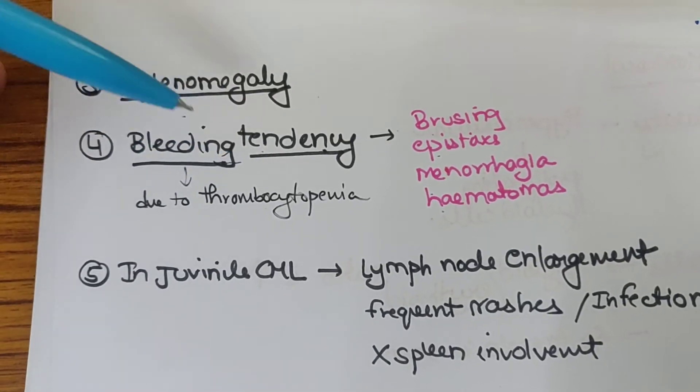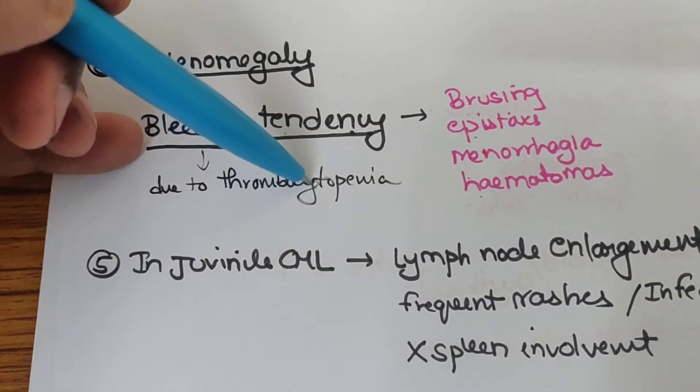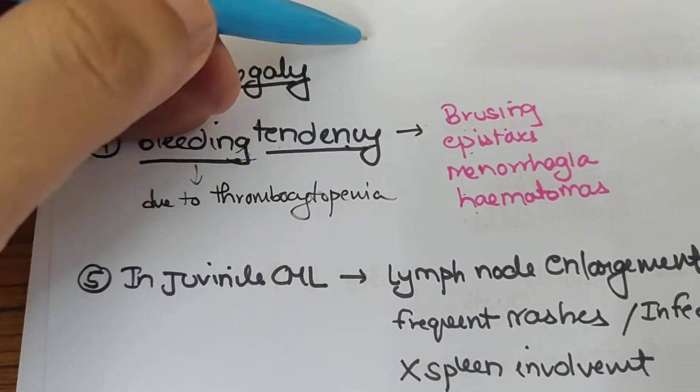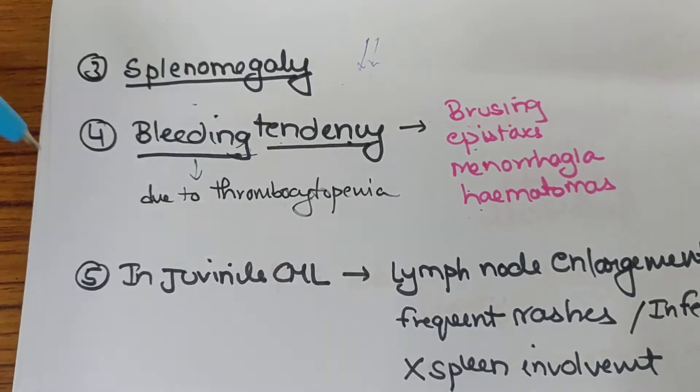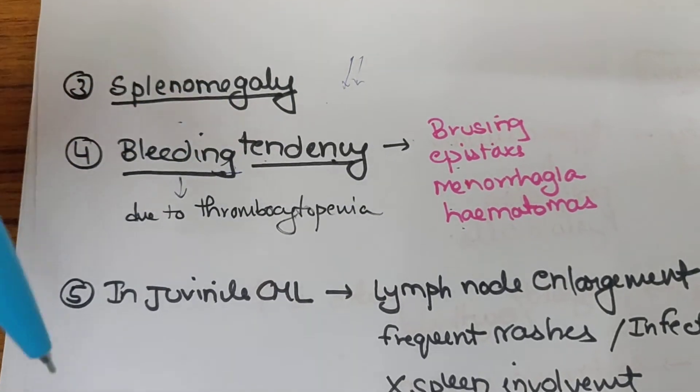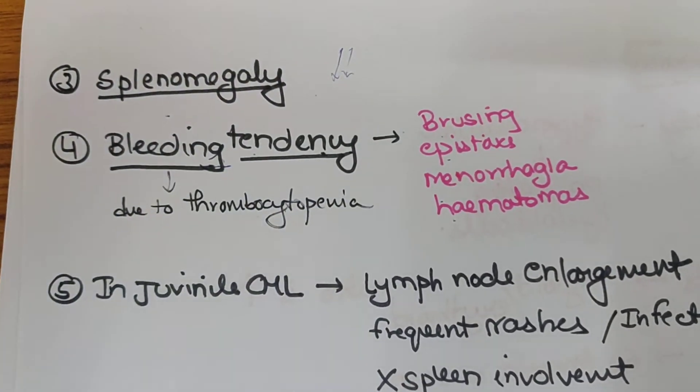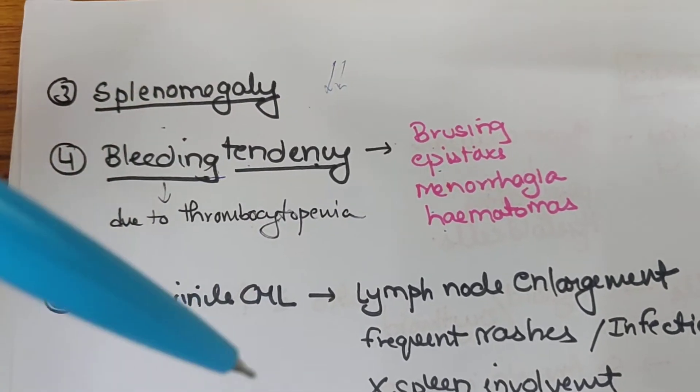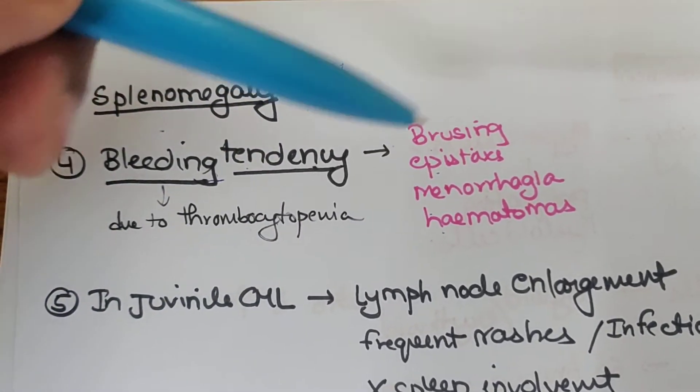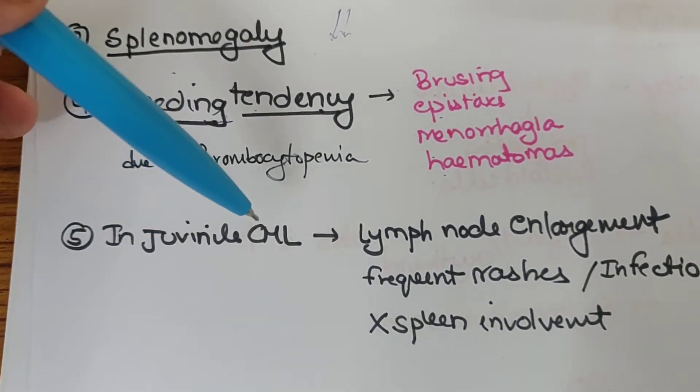Myeloid predominance is seen, with decreased erythroid series and thrombocytopenia. This leads to easy bruising, epistaxis, menorrhagia and hematomas due to bleeding from decreased thrombocytes.